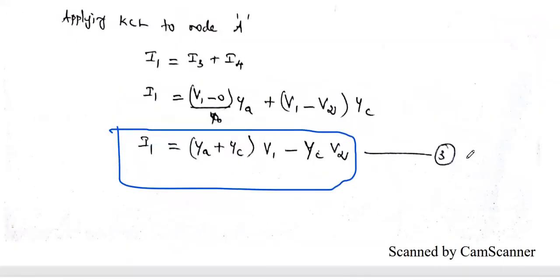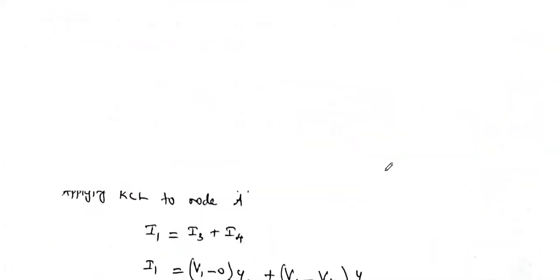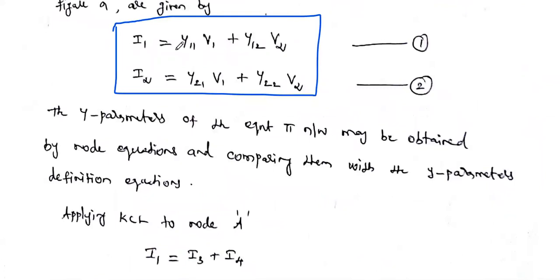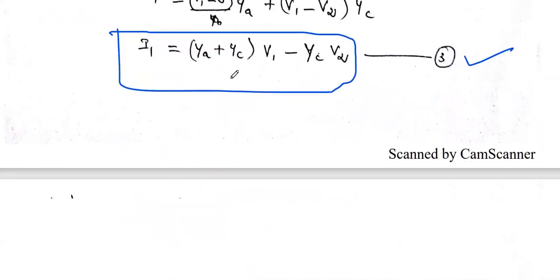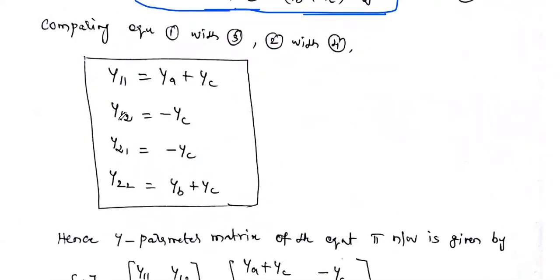Comparing equation 3 and equation 4 with the standard Y-parameter equations 1 and 2, we get: Y11 = Y-A + Y-C, Y12 = −Y-C, Y21 = −Y-C, and Y22 = Y-B + Y-C. This is the relation between the pi network elements and the Y-parameters.